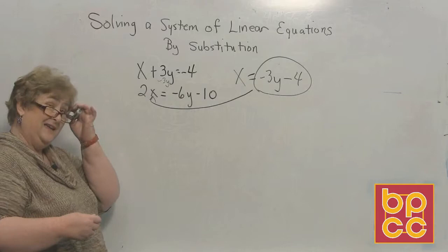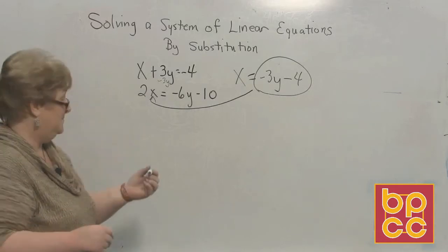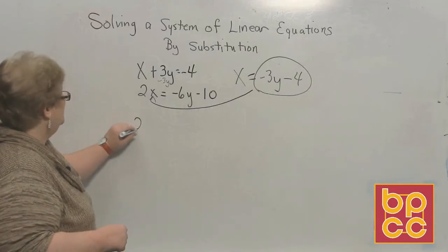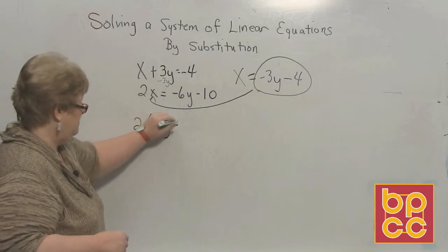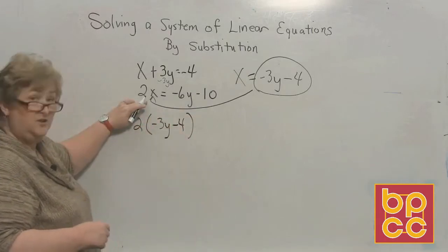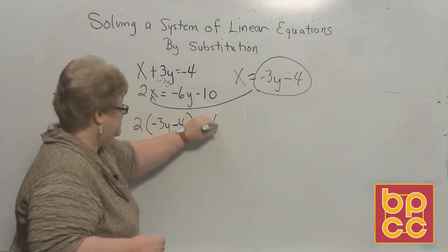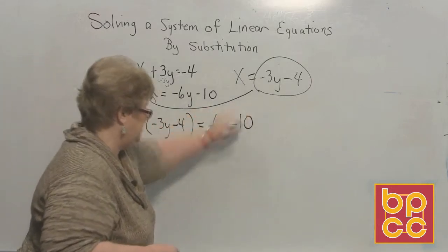Alright, here we go. Let's sub in. You're going to like the answer to this one. I'm going to go 2 times a negative 3y minus 4. Now let's put the equal. Equal a negative 6y minus 10.